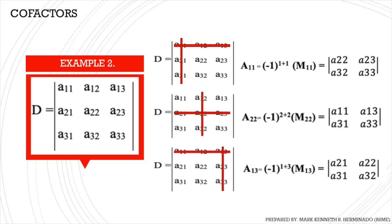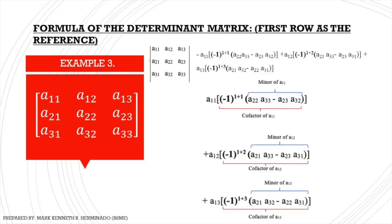Para naman sa cofactor ng a22 at a13, same process lang din. Kung napapansin nyo, positive sila kasi ang exponent nila ay even. Ang exponent ng a22 ay 4, at ang exponent ng a13 ay 4. So positive ang cofactor nito.